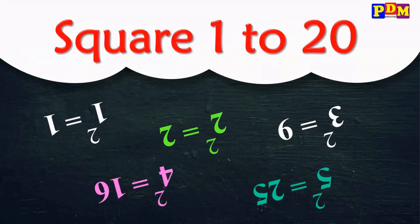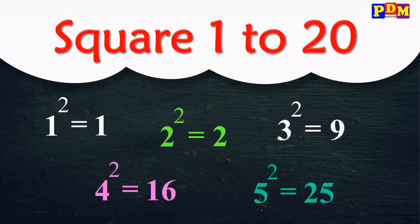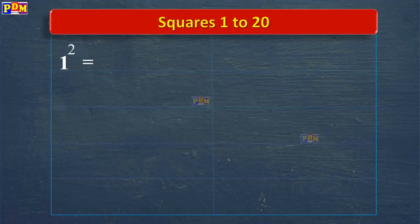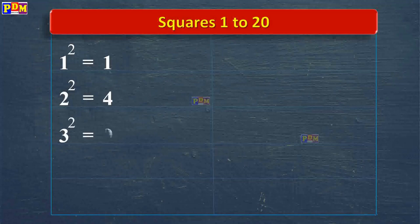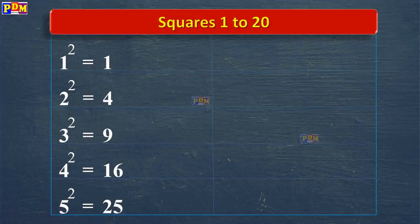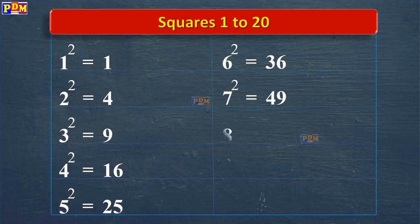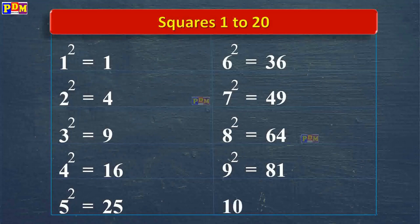1 square 1, 2 square 4, 3 square 9, 4 square 16, 5 square 25, 6 square 36, 7 square 49, 8 square 64, 9 square 81, 10 square 100.